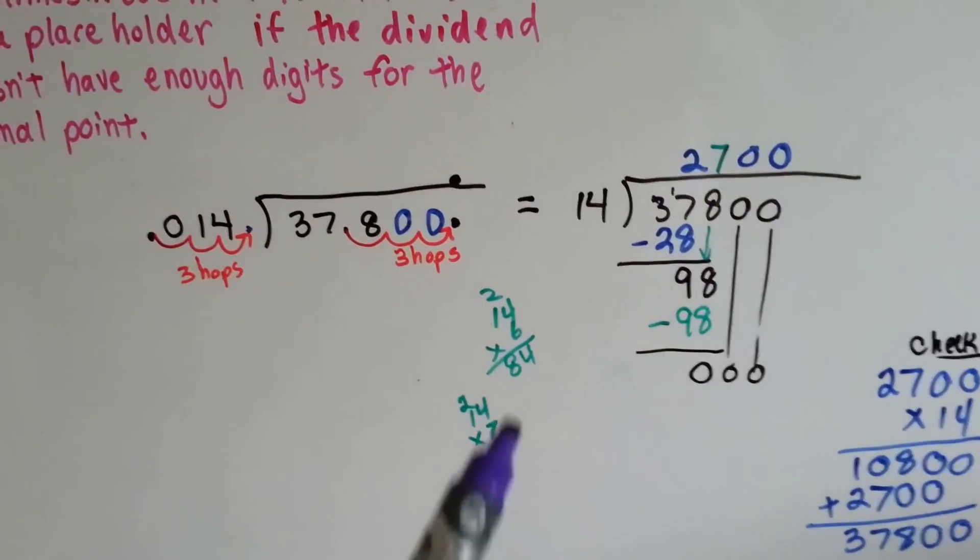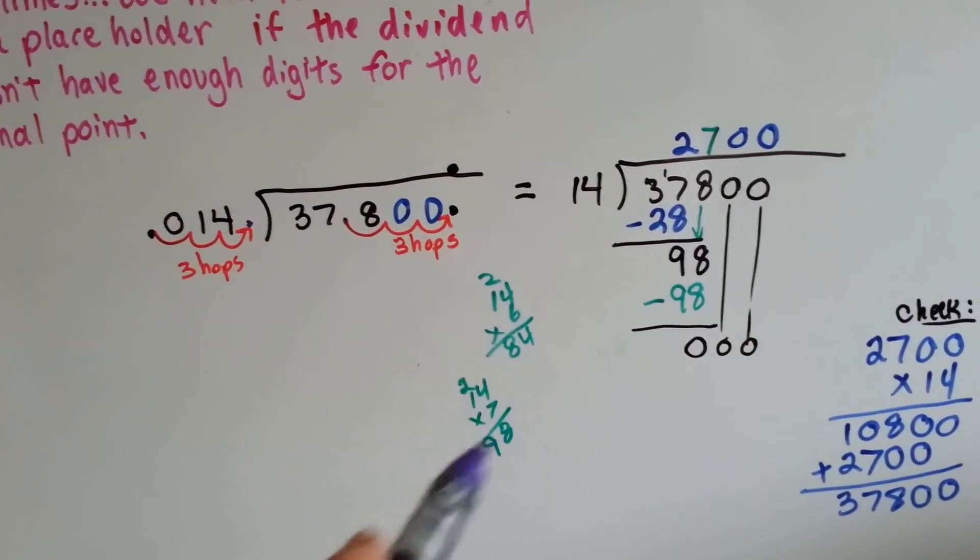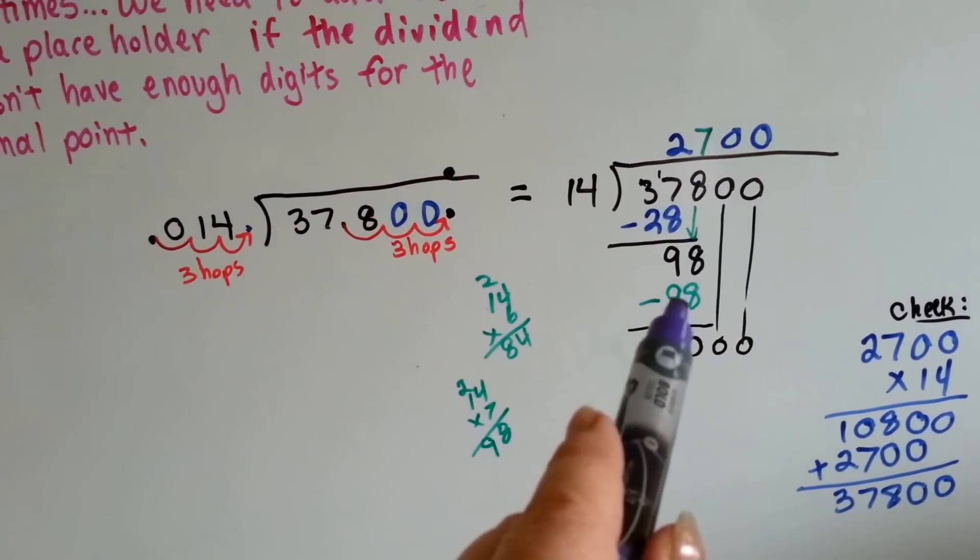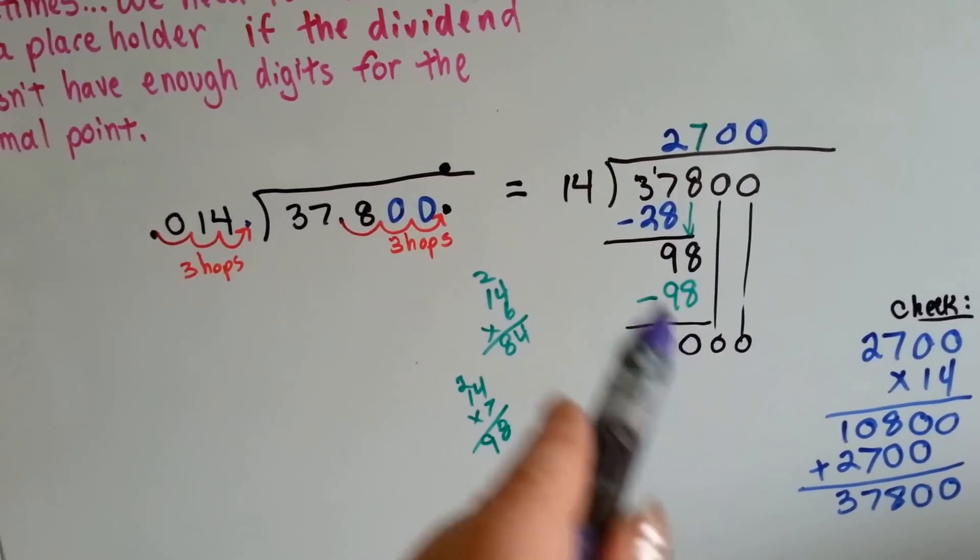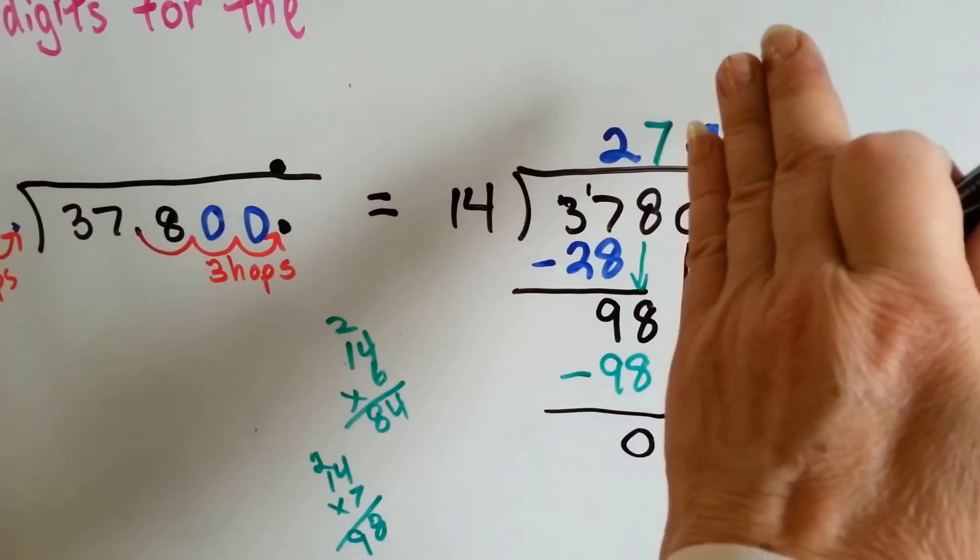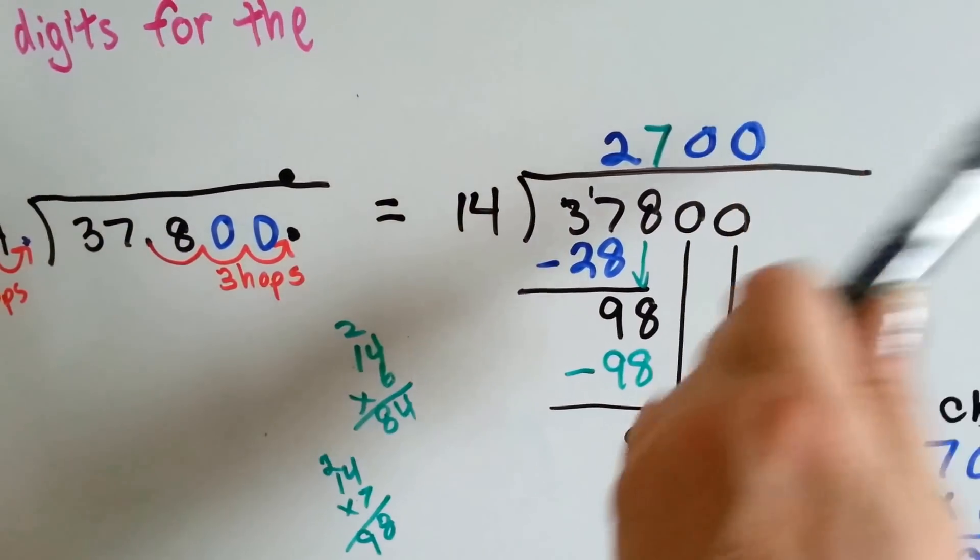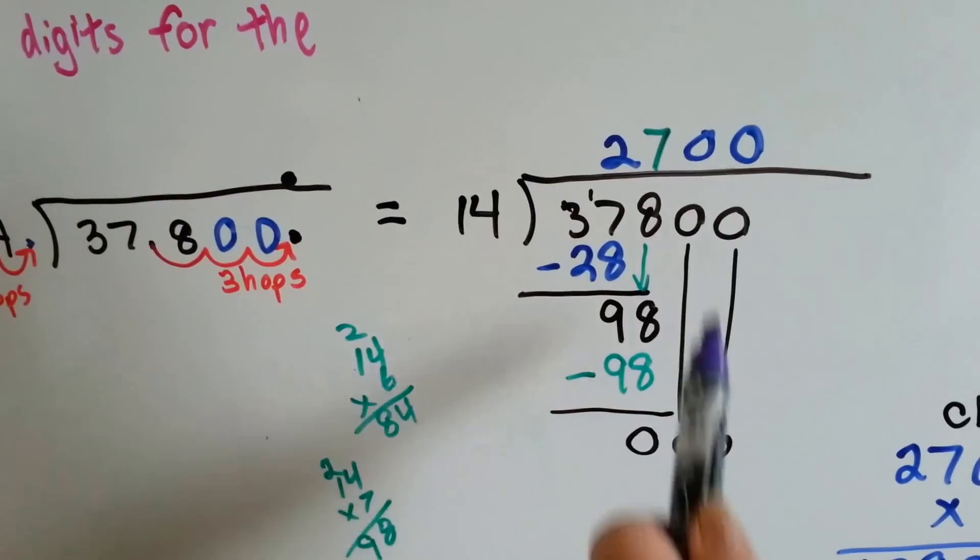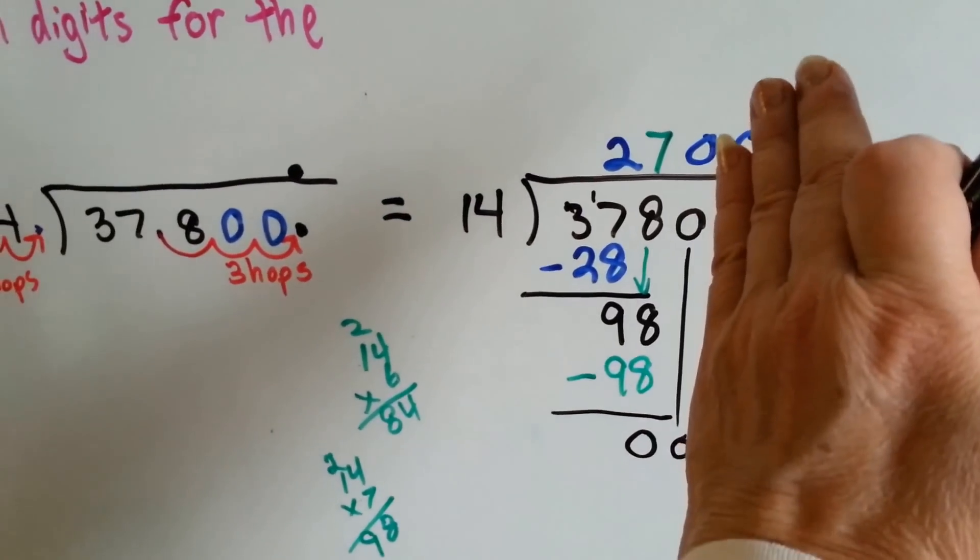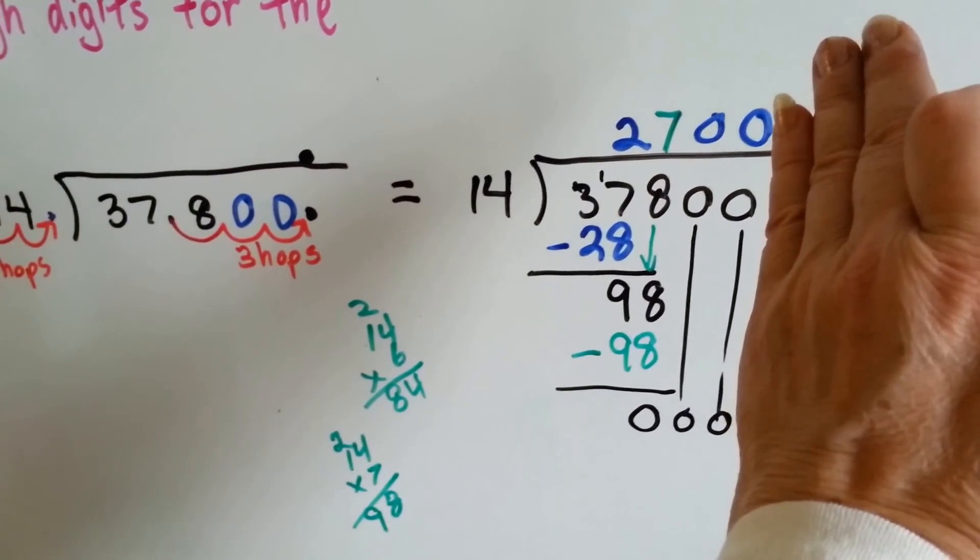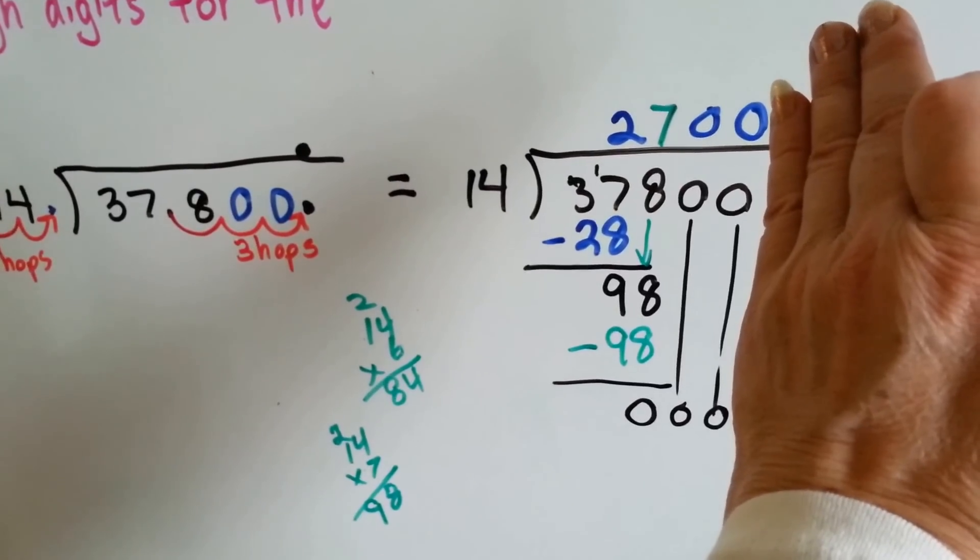Just remember, if you have to, do a little math on the side to help you figure out how many times it'll go in, that's fine. And remember that if we got to here, and 98 minus 98 is zero, and we still had two zeros in the dividend, you don't really need to go any further, just put zeros there, because 14 goes into zero how many times? Zero. And then we drop the other zero, how many times does 14 go into zero? Zero.